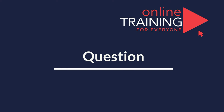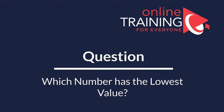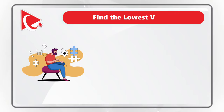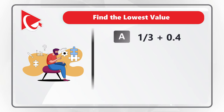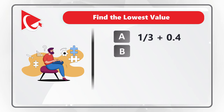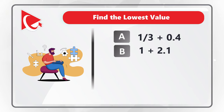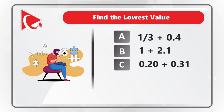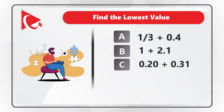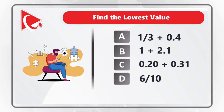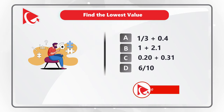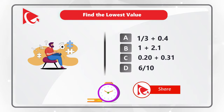I love this question because it truly makes you think. You need to determine which number has the lowest value. Four choices: choice A is 1/3 plus 0.4, choice B is 1 plus 2.1, choice C is 0.2 plus 0.31, and choice D is 6 tenths. Give yourself a few seconds to come up with the solution. The tricky part is that this question is designed to make you do mental math — you need to simplify all the options.